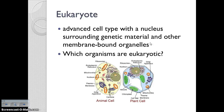Which organisms are eukaryotic? Everything other than bacteria. So bacteria are prokaryotic, which means protists, fungi, plants, and animals are all eukaryotic.